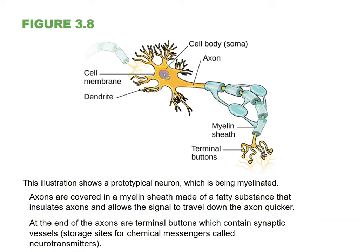From the cell body, information is going to pass along the axon in the form of basically an electrochemical reaction. It's going to go from right here on this neuron all the way down the axon, sped up by the myelin sheath, and then the information is going to be disseminated from these dendrites onto additional dendrites on the receiving neuron.